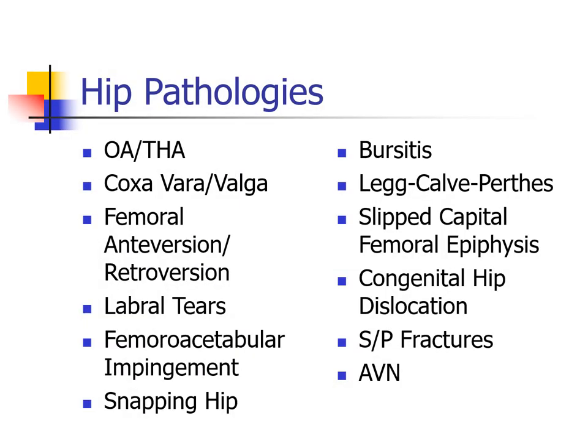In Lecture 3, we discussed hip osteoarthritis and then total hip arthroplasty to some extent. In this particular talk, we'll discuss the remainder of the pathologies on this particular slide, and in some cases we'll talk about the diagnostic workup, some of the clinical presentation factors that are important, and then the evidence-based management associated with that.